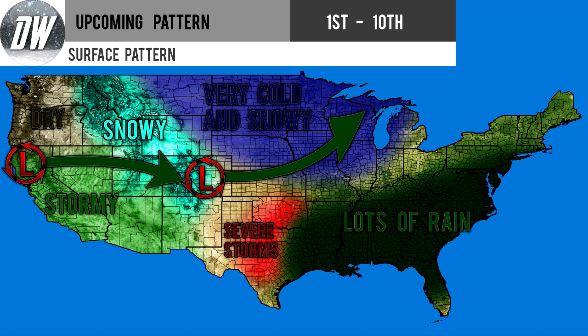Here's a map I put together breaking down this whole pattern for the 1st through the 10th. We see stormy conditions for the southwestern United States, with that low pressure system moving from northern California towards Colorado and then up towards the Great Lakes. We have dry conditions for the northwestern United States above the low pressure system, but we will have snow for the Rocky Mountains — both northern and southern. In that blue section, we have very cold and snowy conditions near or just north of the low pressure system as at least two quite strong low pressure systems move through.